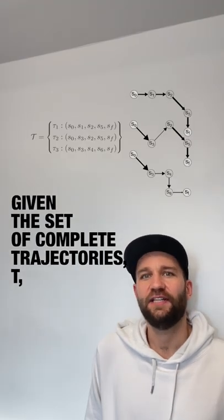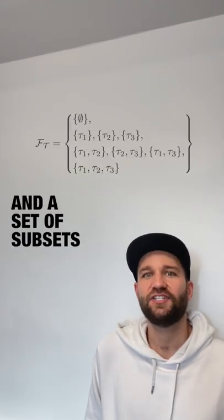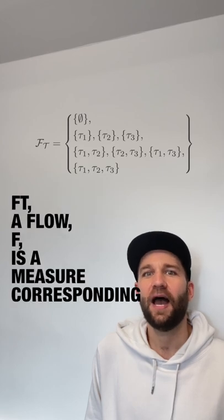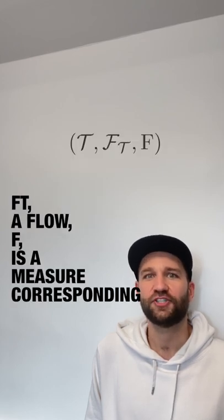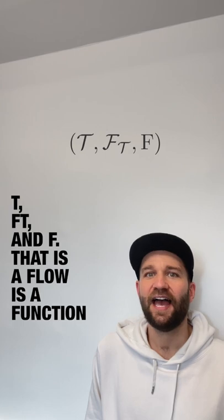Given a set of complete trajectories T, and a set of subsets of complete trajectories F_T, a flow F is a measure corresponding to the measure space T, F_T, and F.